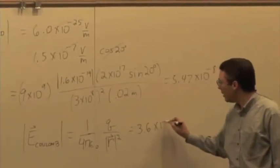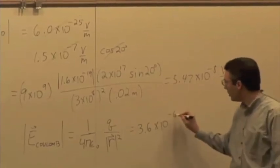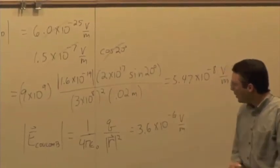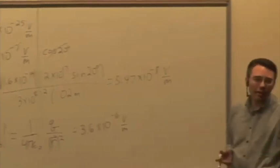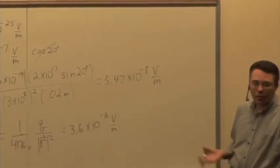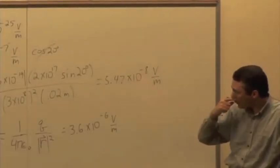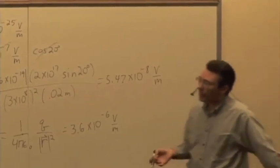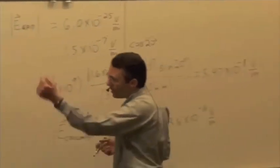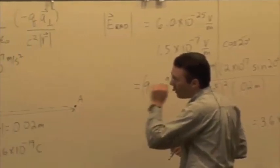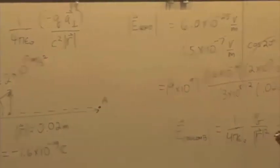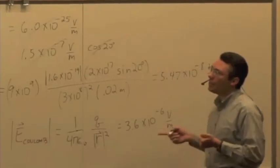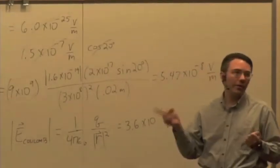3.6 times 10 to the negative 6. So which one's going to dominate? The Coulomb field. This is, you know, 100 times bigger. So at this particular distance, the radiative field, even with this high acceleration, the radiative field is not going to make that big of a difference.